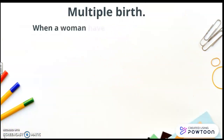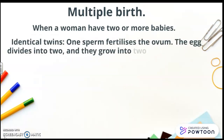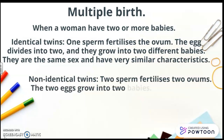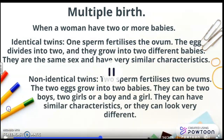Multiple births: when a woman has two or more babies. Identical twins: one sperm fertilizes the ovum, the egg divides into two, and they grow into two different babies. They are the same sex and have very similar characteristics. Non-identical twins: two sperm fertilize two ovums. The two eggs grow into two babies. They can be two boys, two girls, or a boy and a girl. They can have similar characteristics or they can look very different.